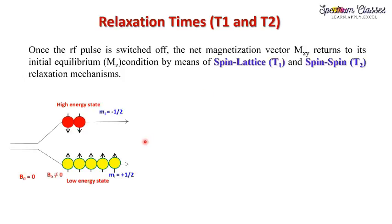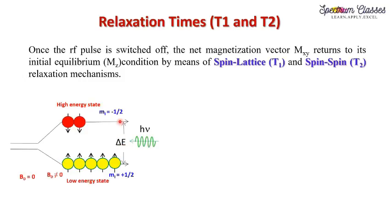We are going to discuss this in the quantum mechanical picture. As we all know, for nuclear spin value 1/2, the nuclei will have two spin orientations: the low energy state and high energy state, represented by Mi = +1/2 and -1/2. According to the Boltzmann distribution law, more nuclei are present in the low energy state. On absorption of energy of appropriate radio frequency — matching the difference between the two energy states — nuclei in the low energy state absorb this energy, switch to the high energy state, and flip their orientation.